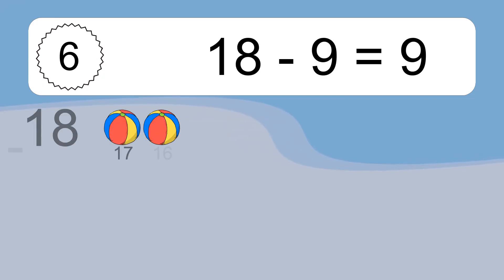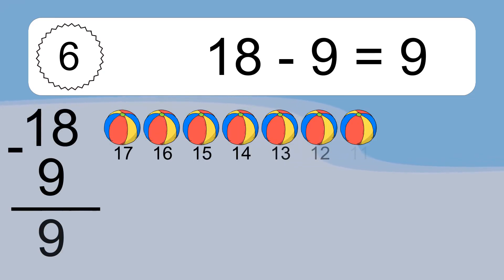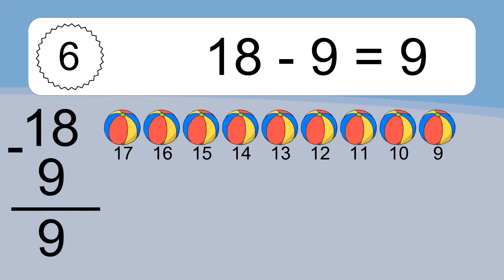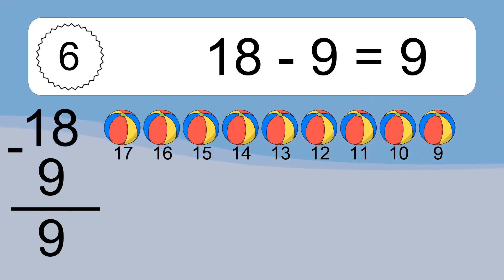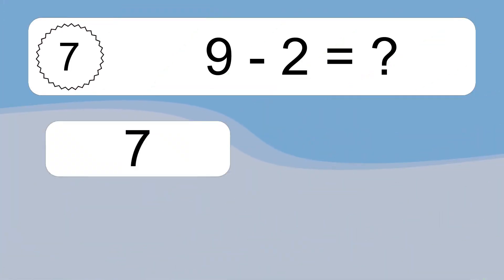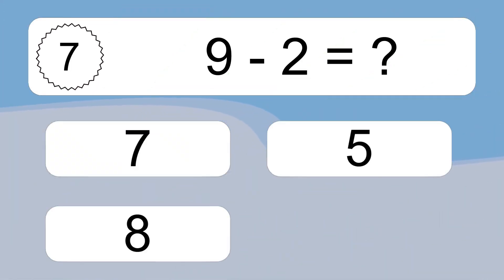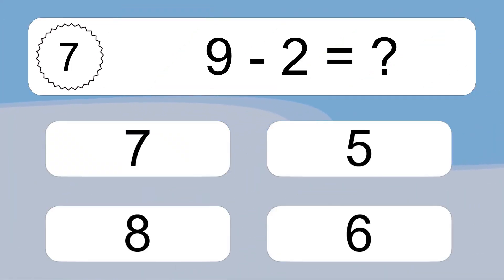18 minus 9 equals 9. Let's count it. 17, 16, 15, 14, 13, 12, 11, 10, 9.